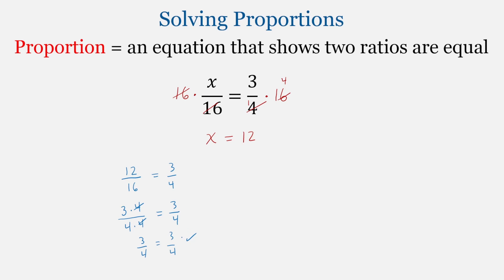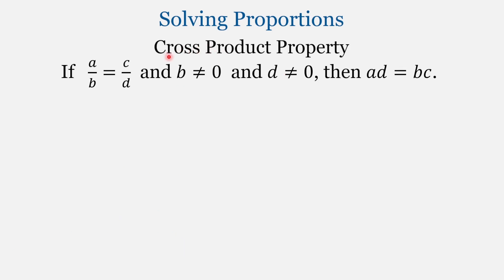But let's look at another way, using the cross product property. If A over B is equal to C over D, and B is not equal to 0 and D is not equal to 0 — so neither of the denominators are 0, because thou shall not divide by 0 — then AD is equal to BC.